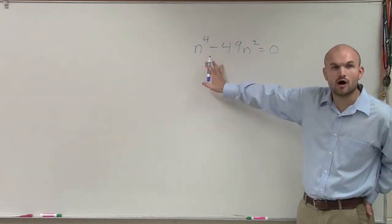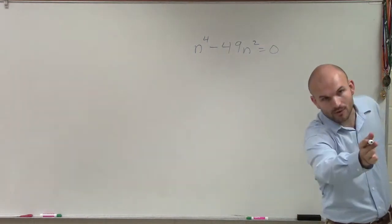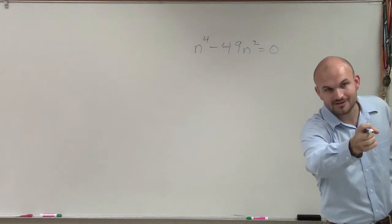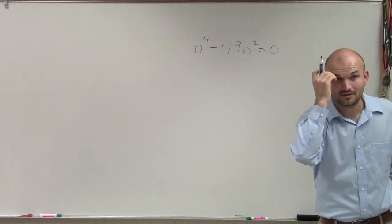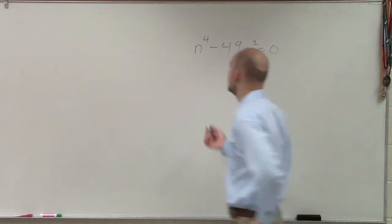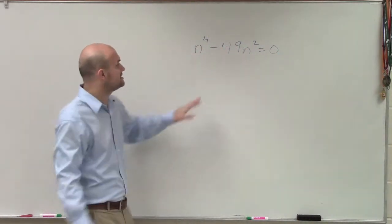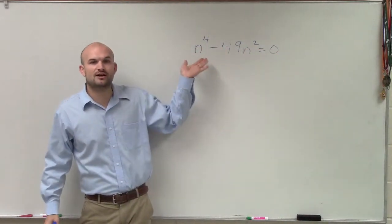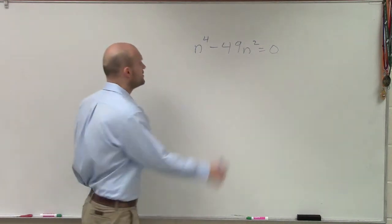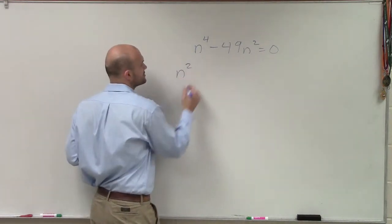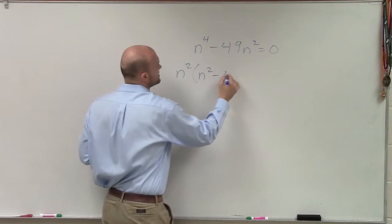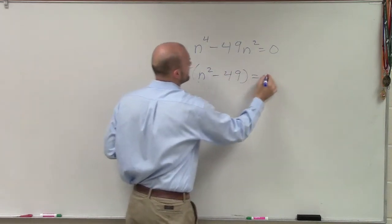So in a problem like this, the first step when factoring is always to factor out the greatest common factor, the GCF, right? And in this case you can see that both of these terms share an n squared, very good. So I take an n squared and I have n squared minus 49 equals zero.